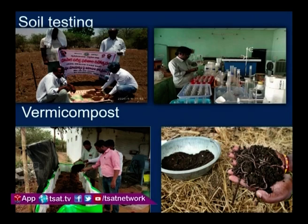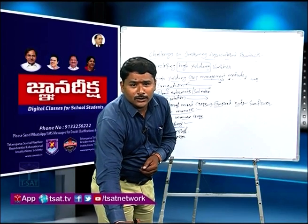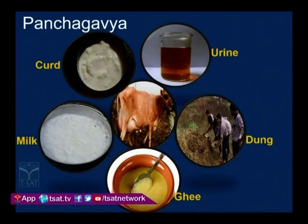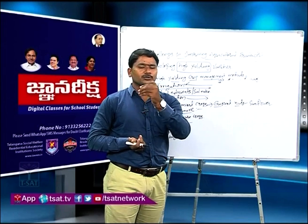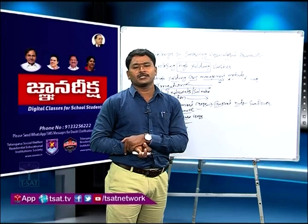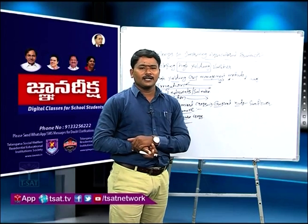Vermicompost involves growing earthworms to produce manure. Panchagavya is prepared from five materials of the cow: cow urine, cow dung, cow ghee, cow milk, and curd. To these, certain materials can be added such as coconut water, toddy, and sugarcane juice. Panchagavya is a natural manure.